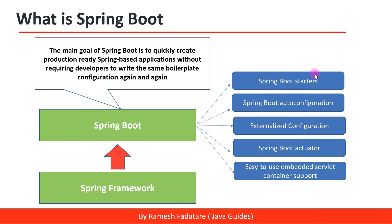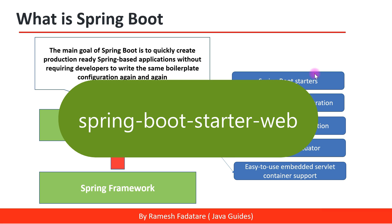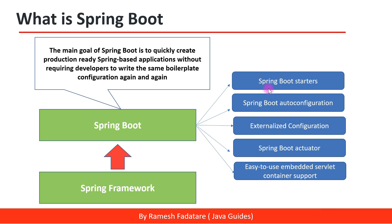We need to only add this starter dependency and it will internally include all the required dependencies to work with Spring Data JPA. One more example is the spring-boot-starter-web dependency. Whenever we add it in our Spring Boot project, it will pull all commonly used libraries such as Spring MVC, Jackson JSON library, Validation API, and Tomcat server.